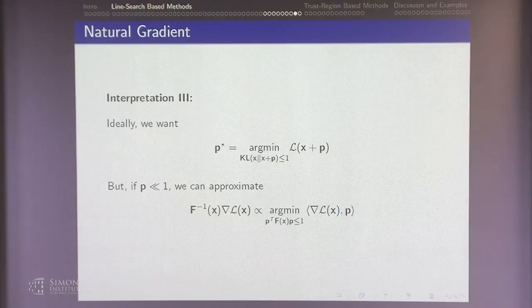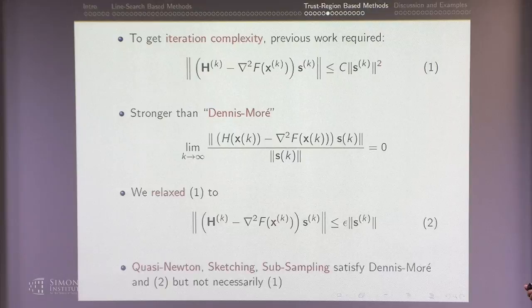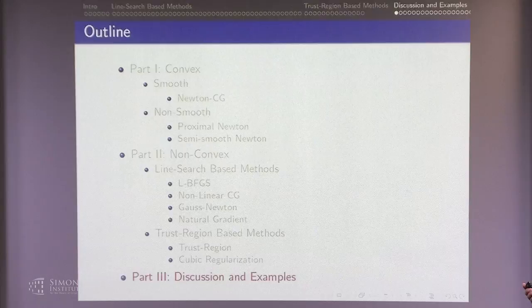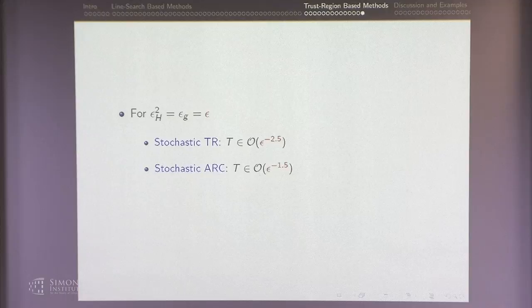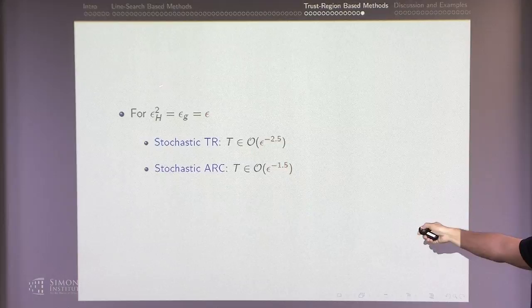I'm not going to cover trust region and cubic regularization in detail, as Michael alluded to that yesterday. With stochastic trust region or stochastic cubic regularization, you end up getting rates that are optimal — satisfying the epsilon-approximate second-order optimality condition. None of the other methods I showed satisfy those approximate optimality conditions for both gradient and Hessian simultaneously, but these two do.